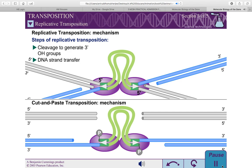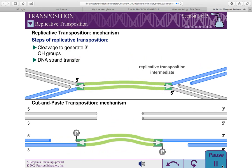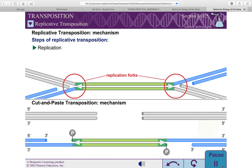The replicative transposition intermediate therefore consists of a doubly branched DNA molecule. The two DNA branches within this intermediate each have the structure of a replication fork.